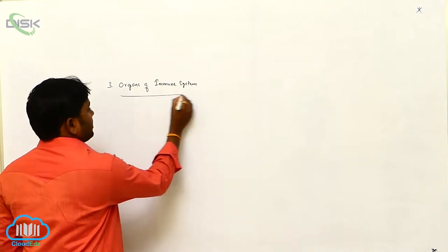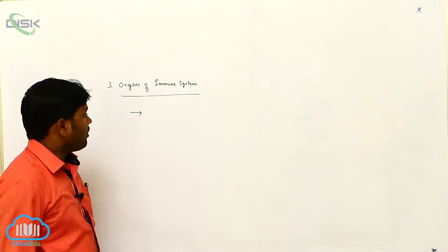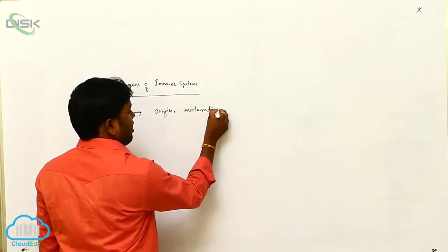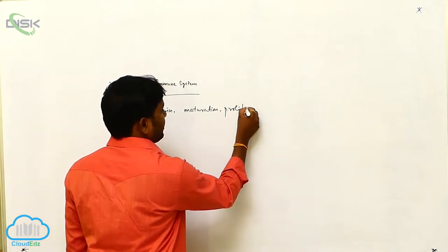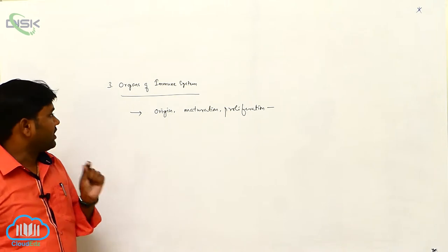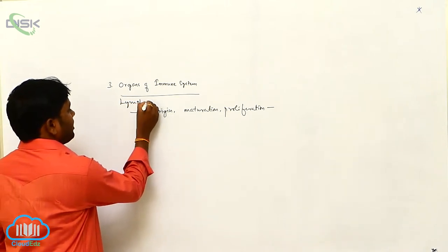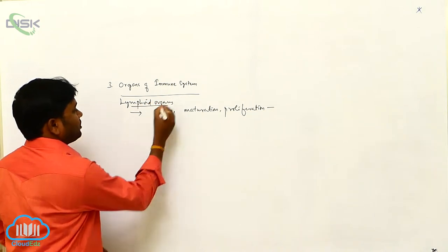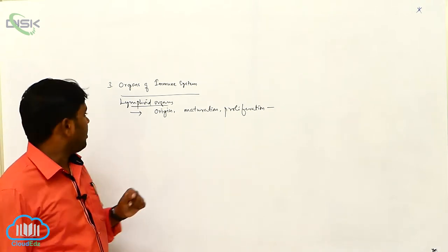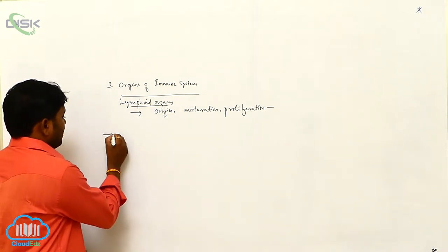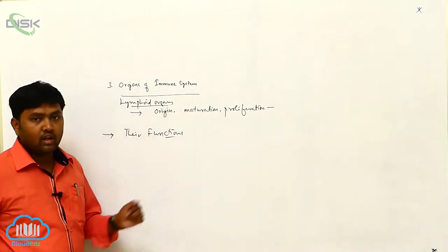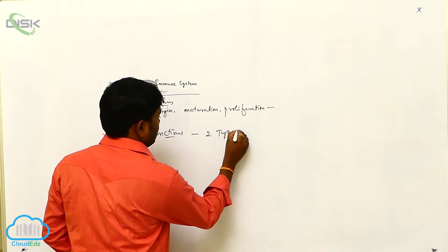Organs of the immune system: the organs involved in the origin, maturation, and proliferation of lymphocytes are called lymphoid organs. Based on their function, the lymphoid organs are of two types.